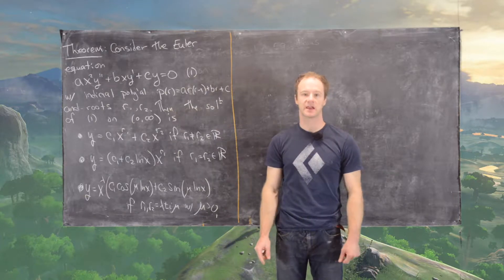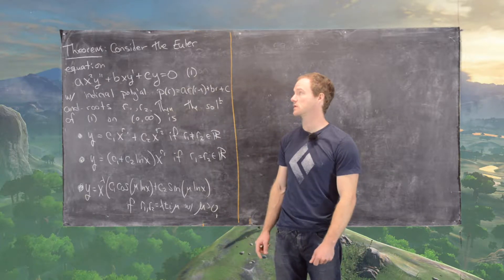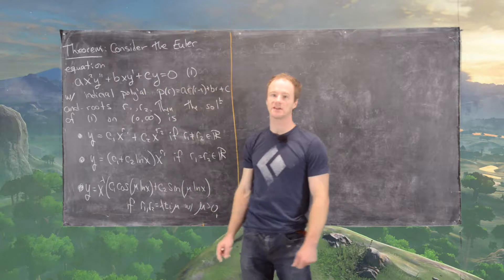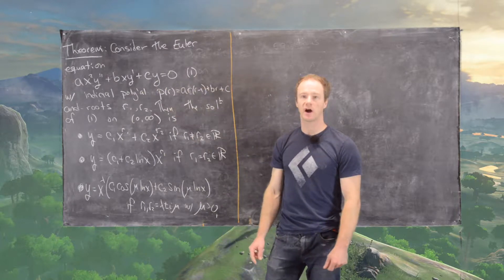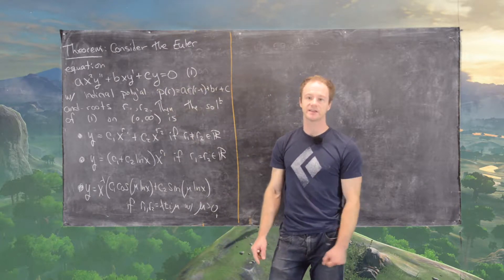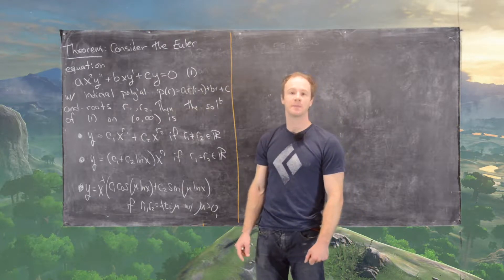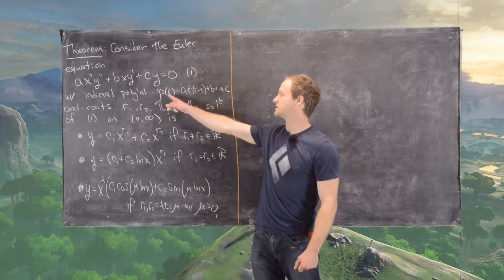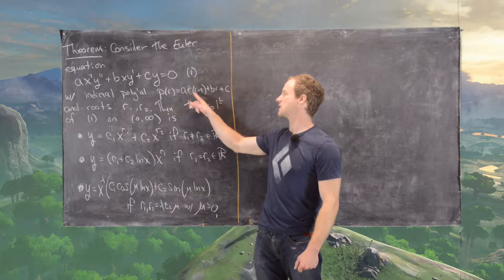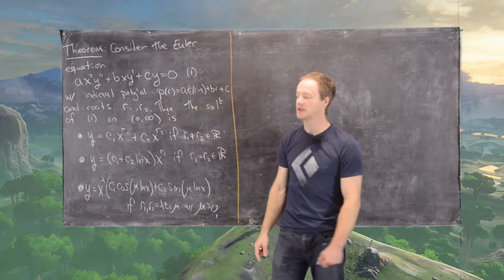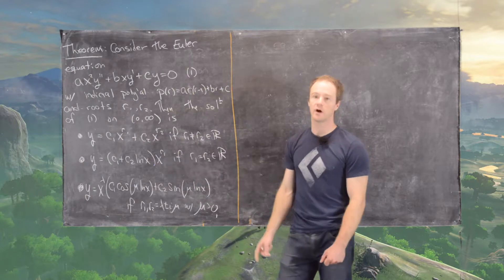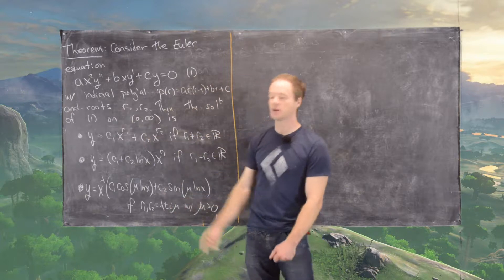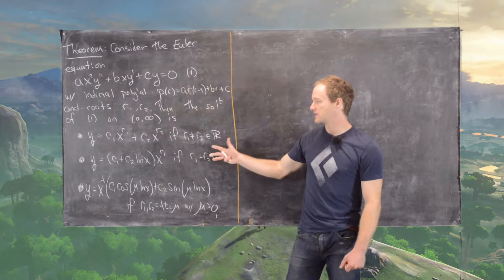In this video we're going to look at the following theorem that categorizes solutions to Euler equations — differential equations of the form ax² y'' + bxy' + cy = 0, where a, b, and c are real numbers and a is non-zero. Associated to it is the indicial polynomial p(r) = a·r(r−1) + b·r + c. If that has roots r1 and r2, then the solution on the interval (0, ∞) breaks into three cases.